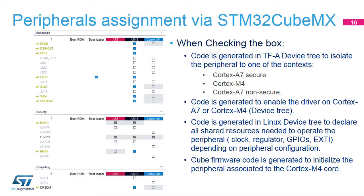This screenshot shows the example of an assignment as it can be done with the STM32-CubeMX tool. USART4 is assigned to the Cortex-A7 non-secure context for Linux. USART5 is assigned to the Cortex-M4 context for STM32-Cube. Depending on the configuration selected, the STM32-CubeMX tool assigns the peripheral to a Cortex context by isolating the peripheral by configuring the TFA device tree, configuring the Linux device tree to enable or disable the node depending on the assignment, declaring the system resources involved to operate the peripherals assigned to the Cortex-M4 core, or generating Cube firmware initialization code for the peripheral assigned to the Cortex-M4 core.